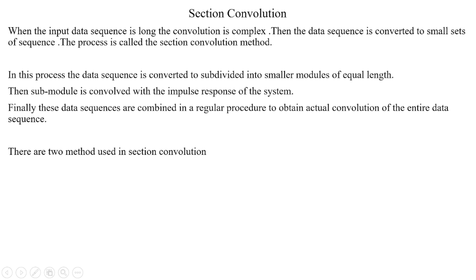There are two methods in section convolution. First, the overlap-save method, and second, the overlap-add method. First, we will talk about the overlap-save method.